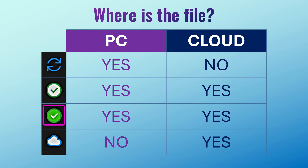The third one is the white tick mark. The file is on PC and cloud, but there is a difference — watch till the end to understand it. The cloud icon means the file is not on the local drive; it is there only on the cloud.